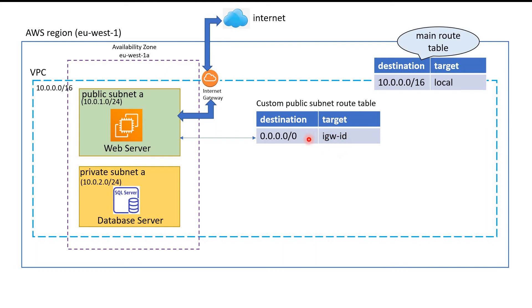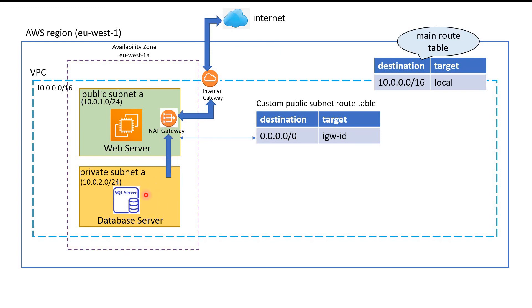If the destination is the internet, the request will go through the internet gateway — the target will be the internet gateway. This means if the web server wants to access the internet, the traffic goes through the internet gateway. For the database server, it is still associated with the main route table, so it cannot access the internet. If you want to patch the database for the latest security fixes, you would not be able to do that. For this purpose, we need a NAT gateway, which we will create in the public subnet.